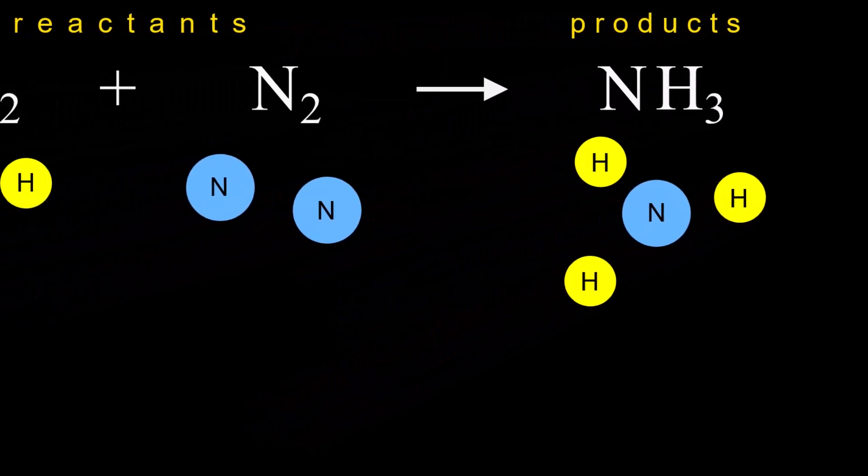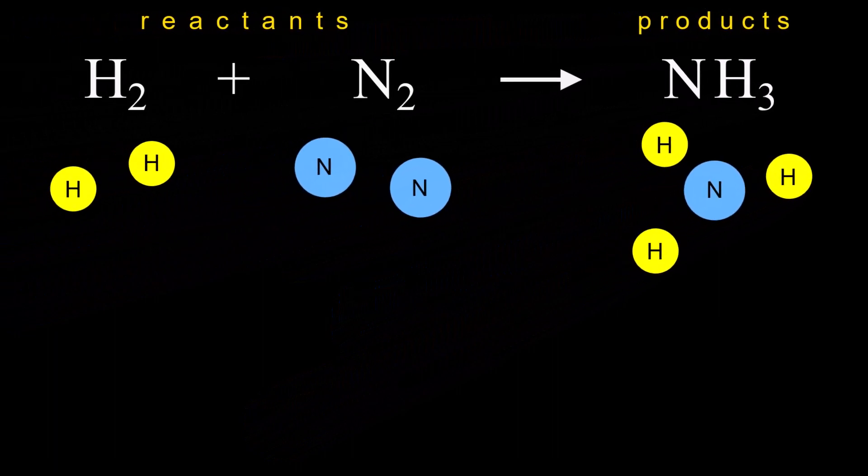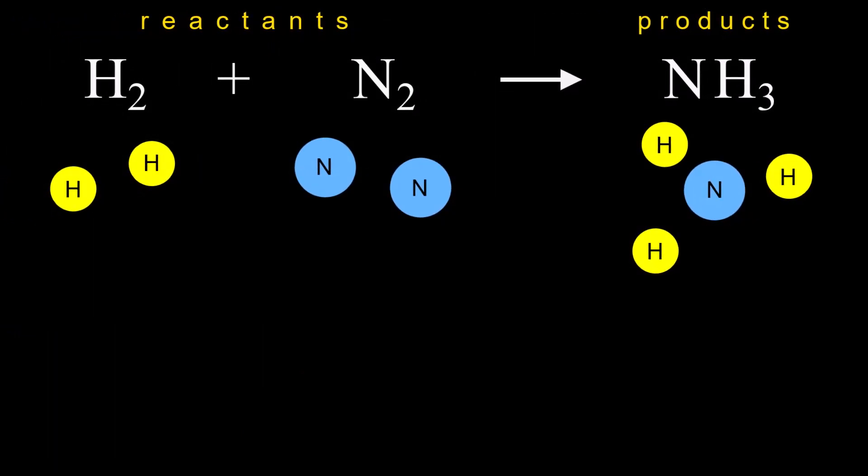Atoms are extremely tiny, far too tiny to see, but we can model them here as a simple circle. And in fact atoms do have a spherical shape or a circle in two dimensions. So here we model hydrogen as a yellow circle and nitrogen as a blue circle.